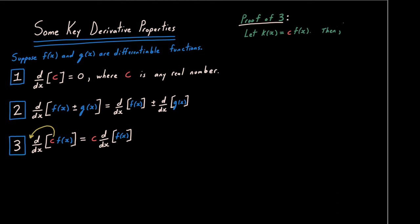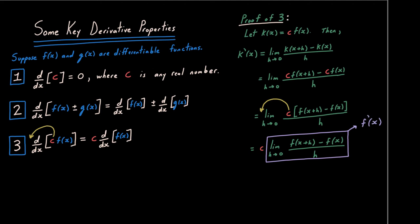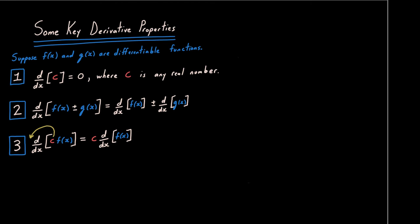For property three, let k(x) = c·f(x). Applying the limit definition and factoring c in front of the f terms, we can pull c outside the limit entirely. What remains is the very definition of f'. So d/dx[c·f(x)] = c·f'(x). That's the proof.